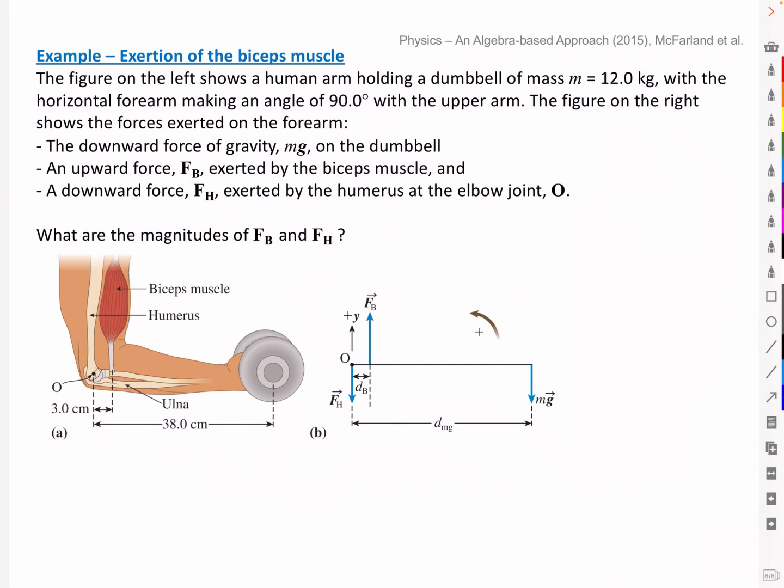So let's start with a simple example that demonstrates the equilibrium within the human body. The figure on the left shows a human arm holding a dumbbell of mass m equal to 12.0 kg, with the horizontal forearm making an angle of 90 degrees with the upper arm, and the figure on the right shows the forces exerted on the forearm. The downward force of gravity mg on the dumbbell, an upward force Fb exerted by the biceps muscle, and a downward force Fh exerted by the humerus on the elbow joint.